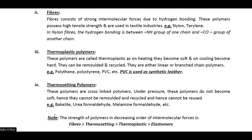A very important point to note: the strength of polymers in decreasing order of intermolecular forces. The strongest intermolecular force in polymers is found in fibers and the weakest in elastomers. Out of thermosetting and thermoplastic, thermosetting is harder and therefore stronger than thermoplastic polymers. Hence the strength of polymers in decreasing order is: fibers > thermosetting > thermoplastic > elastomers.